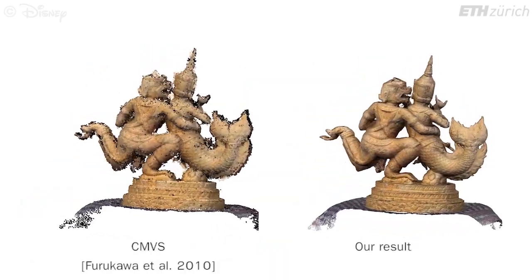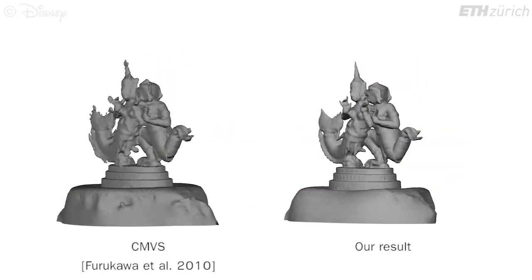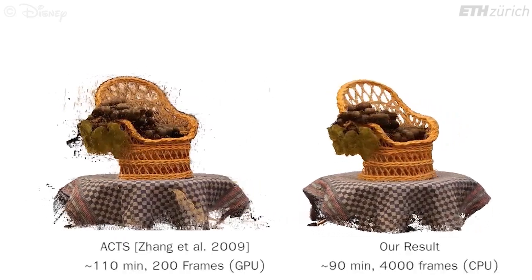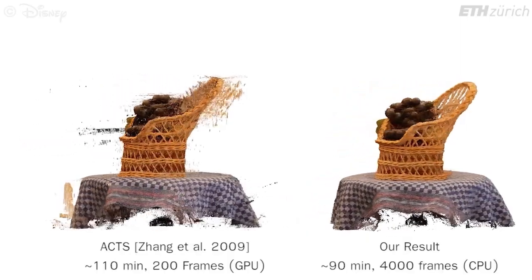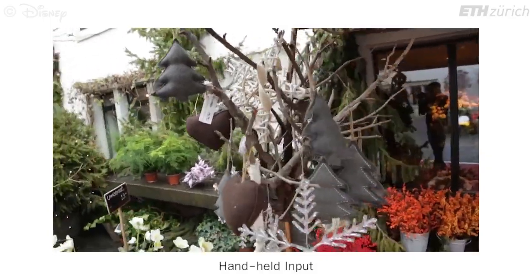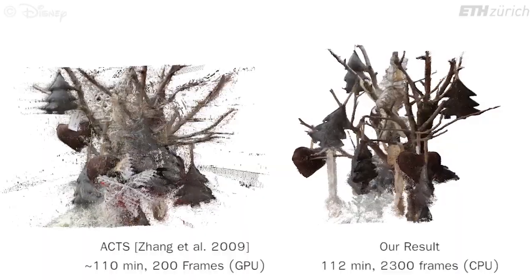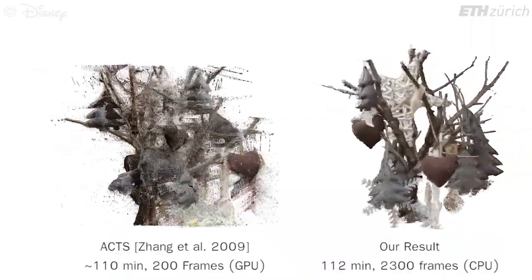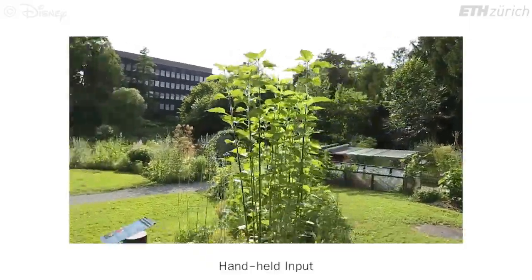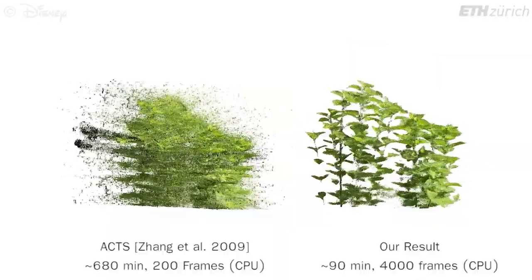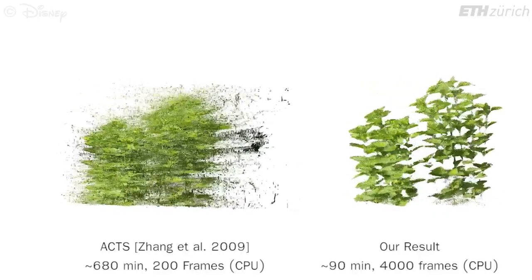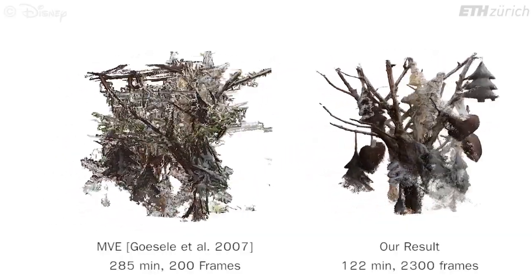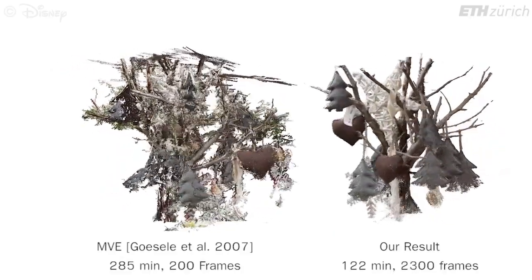Here we show the point cloud rendered with estimated normals. Here we show comparisons to the ACTS approach based on publications from Zhang and colleagues. ACTS generates per-image depth maps, which we project into 3D space. We also compare to point clouds computed using the multi-view reconstruction technique of Goeseler and colleagues, and meshes computed with the floating surface technique of Furman and Goeseler.